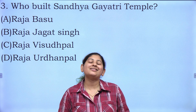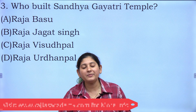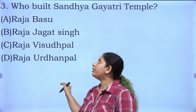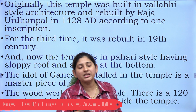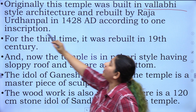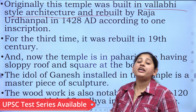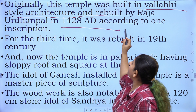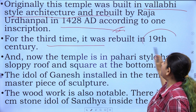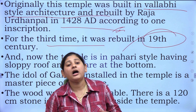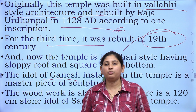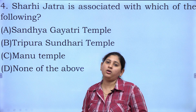The third question is: who built the Sandhya Gayatri temple? Option A is Raja Basu, B is Raja Jagatsingh, C is Raja Vishuddhpal, and D is Raja Udhar Nipal. Your correct answer is D) Raja Udhar Nipal. Originally the Gayatri Mata temple was built in Vallabhi style architecture. It was rebuilt by Raja Udhar Nipal in 1428 AD, according to an inscription. For the third time it was rebuilt again in the 19th century. The temple has a Ganesh ji idol installed inside and very beautiful woodwork. If you get time, please visit the Gayatri Mata temple.